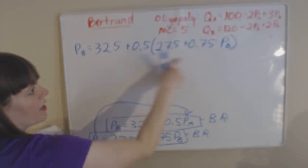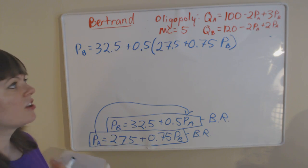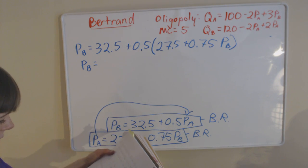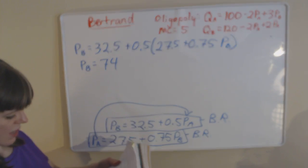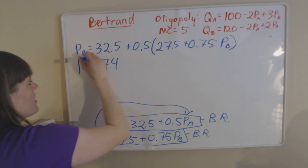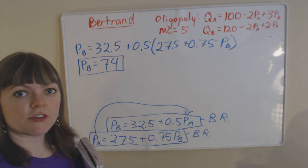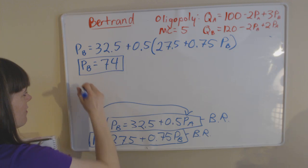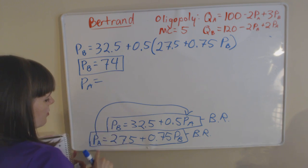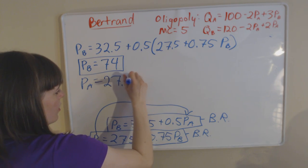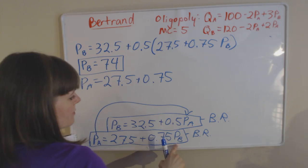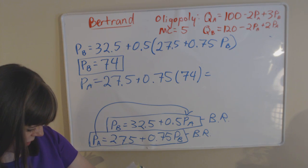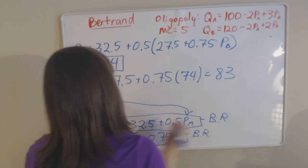When you solve that equation using algebra, you find that PB equals 74. So there's our price for firm B. Now we need the price for firm A, which is easy because we have A's best response function. We plug 74 into A's best response function: PA equals 27.5 plus 0.75 times PB, which is 74. The price of firm A is equal to 83.